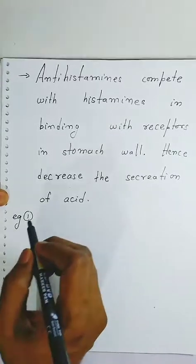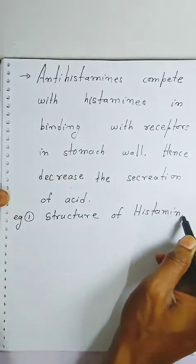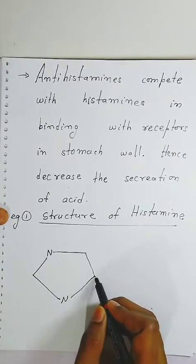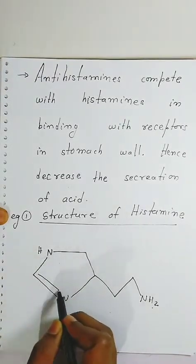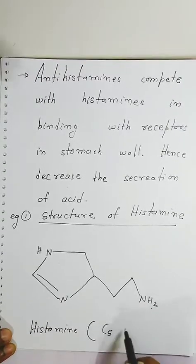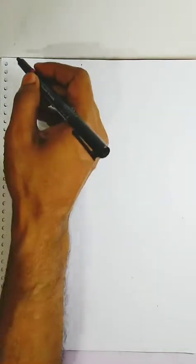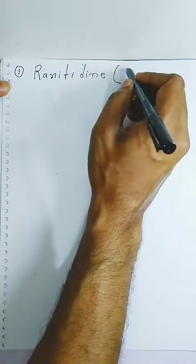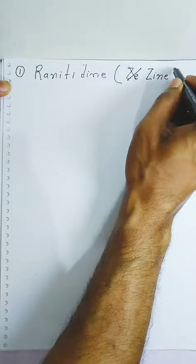We will first see the structure of histamines, then the structure of the anti-histamine drug. One very popular example is ranitidine. Doctors prescribe this drug if anybody has acidity. It is also called by its common name Zantac. The molecular formula of ranitidine contains 13 carbon, 22 hydrogen, 4 nitrogen, 3 oxygen, and 1 sulfur.